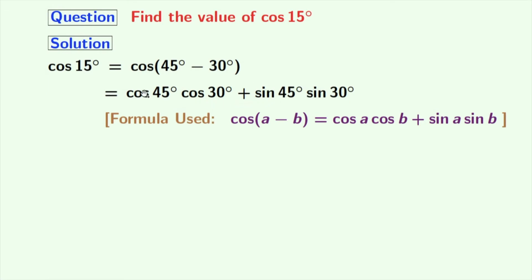Now we will put the values of the cosine and sine functions involved here. Cos 45° is 1/√2, cos 30° is √3/2, sin 45° is 1/√2, and sin 30° is 1/2.